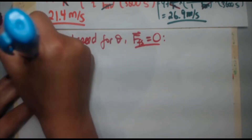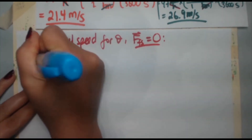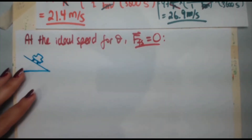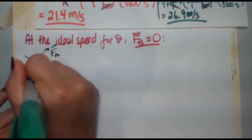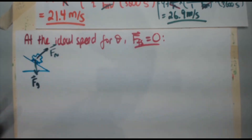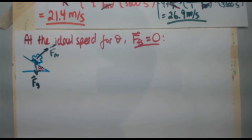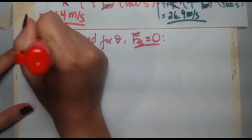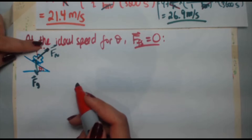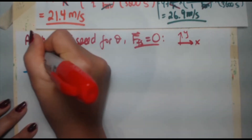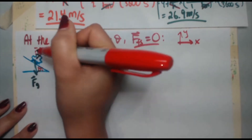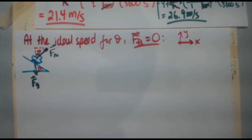If friction equals zero, I'll draw a quick free body diagram. There's the car. With no friction, the only two forces are the normal force and gravity. The angle between FN and the vertical is theta. Breaking FN into its x and y components — same coordinate system as before — that internal angle is also theta by simple trigonometry.